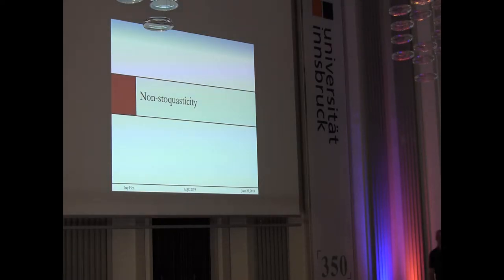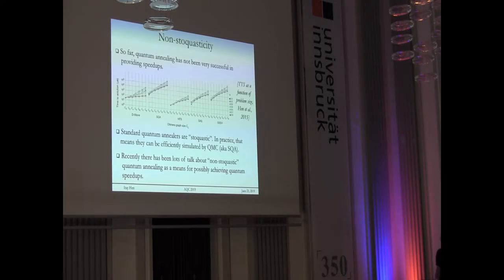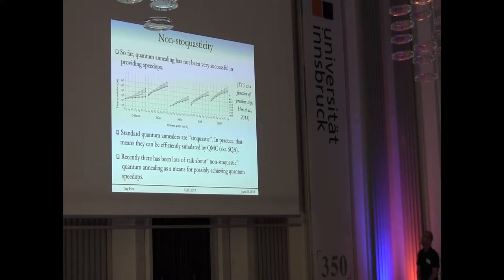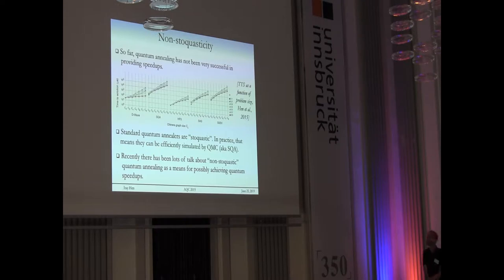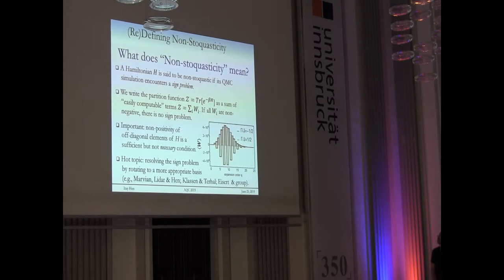The reason non-stoquasticity is important is that so far with standard quantum annealing — using a transverse field or stoquastic quantum annealing — we have not seen any speedups. People attribute that to the fact that quantum Monte Carlo can efficiently simulate stoquastic quantum annealing. So recently there's been a lot of discussion about achieving speedups with non-stoquasticity.